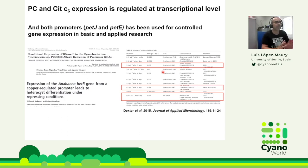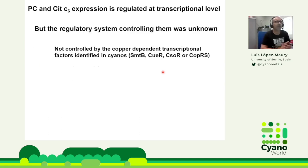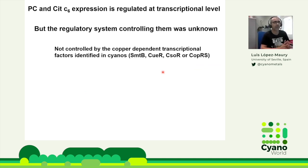Despite these two genes being widely used, the regulatory system was completely unknown. It's not because people hadn't looked for the regulators. People tried all copper-dependent transcription factors in cyanobacteria or in other bacteria and looked for homologues in cyanobacteria to see if these two genes were regulated by them. For some time it was proposed that FUR was controlling the switch, but it was clear a few years ago that neither gene is controlled by FUR.